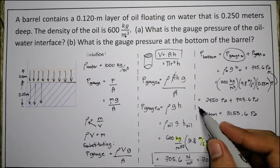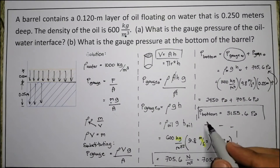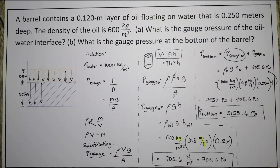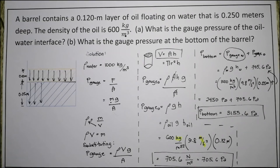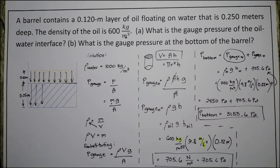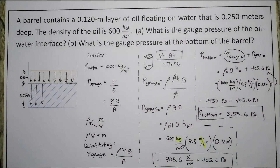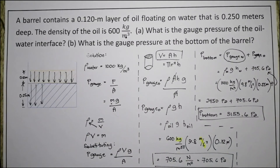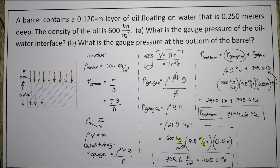So 3,155.6 pascals is the answer for letter B. That's all for this video. If you have questions, you may comment down below, and you may also post other questions in the comment section. Thank you for watching.